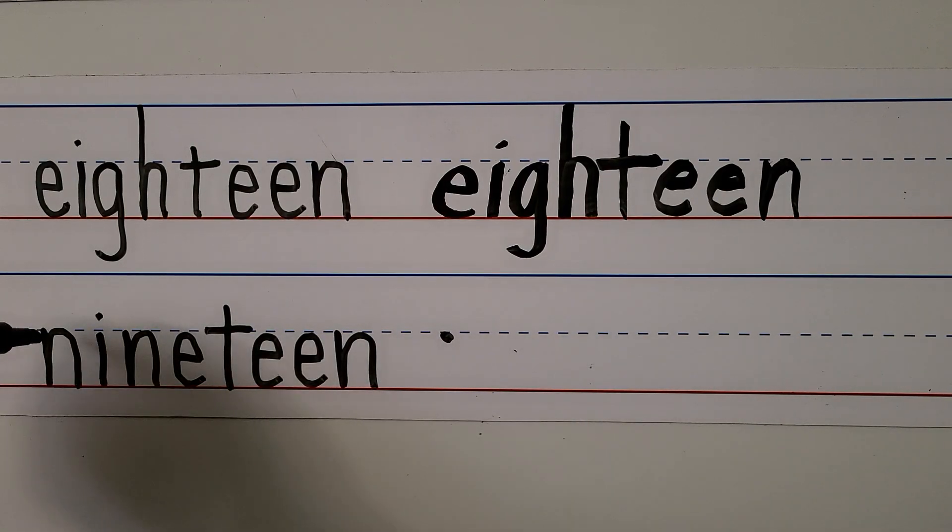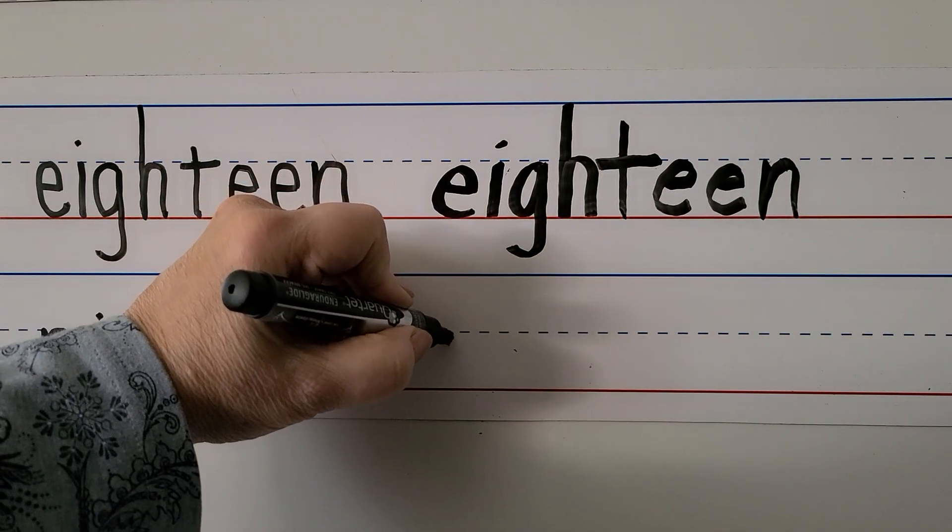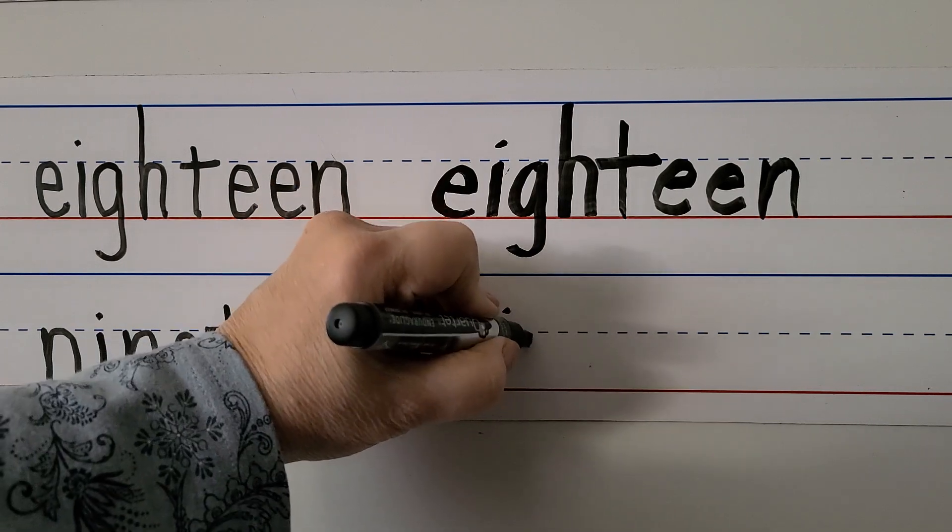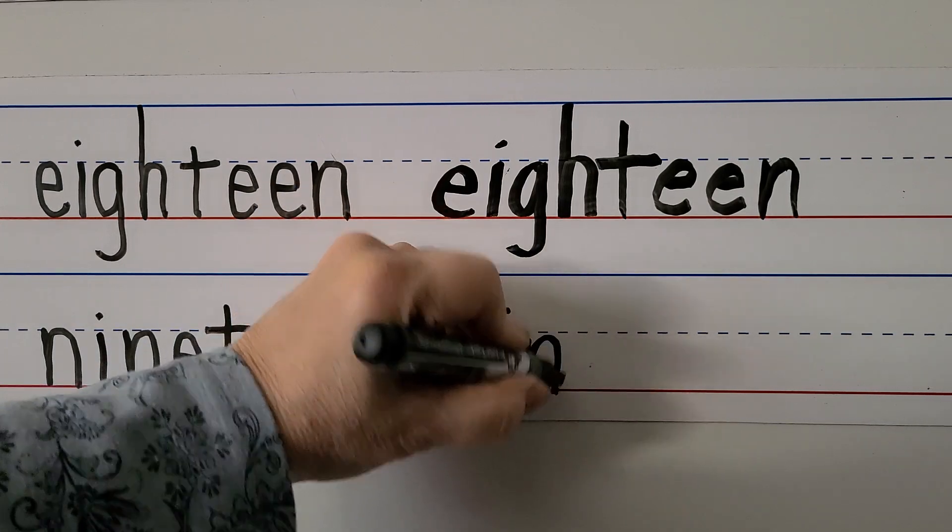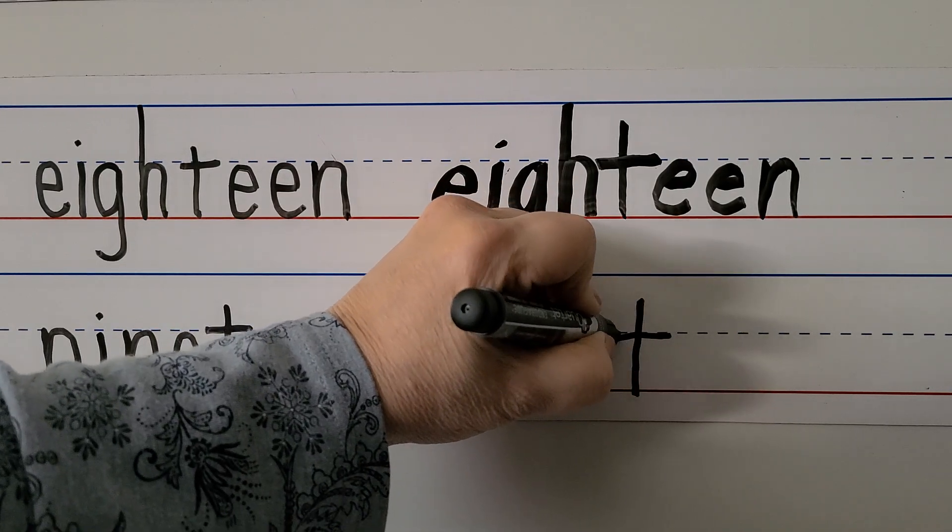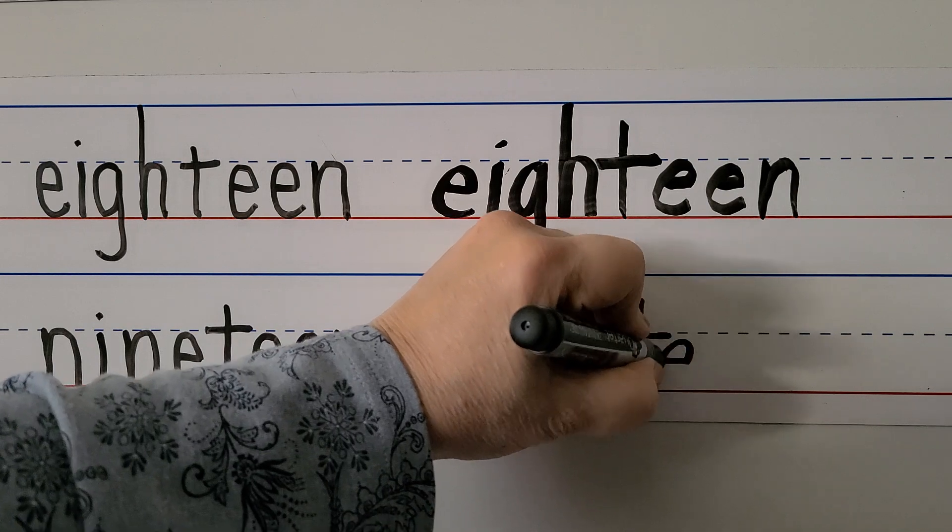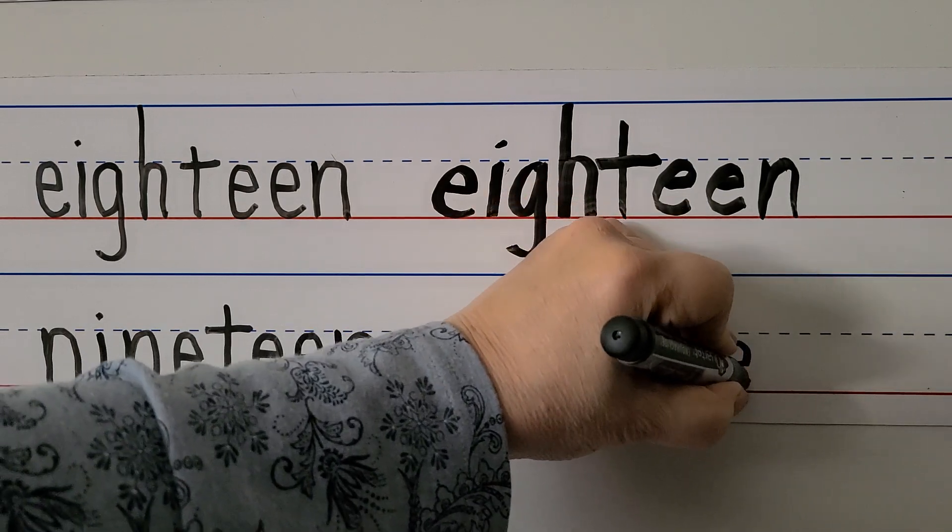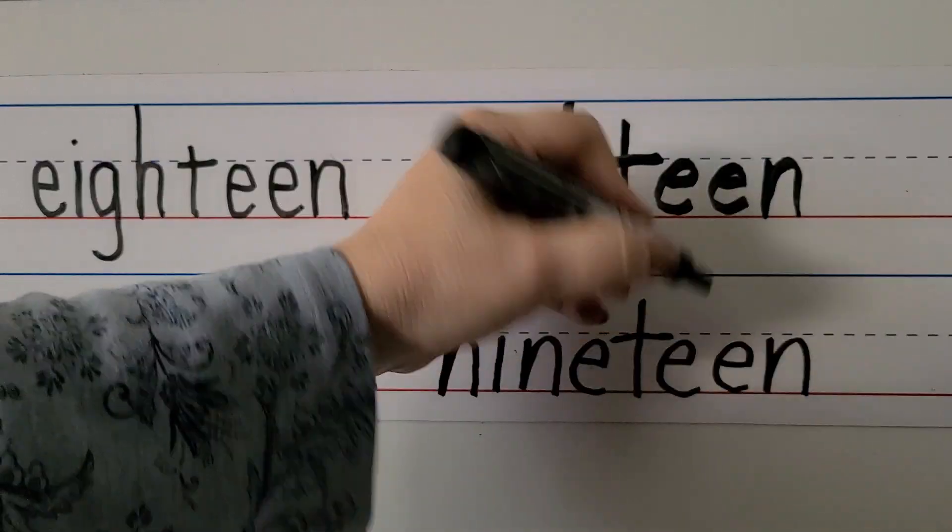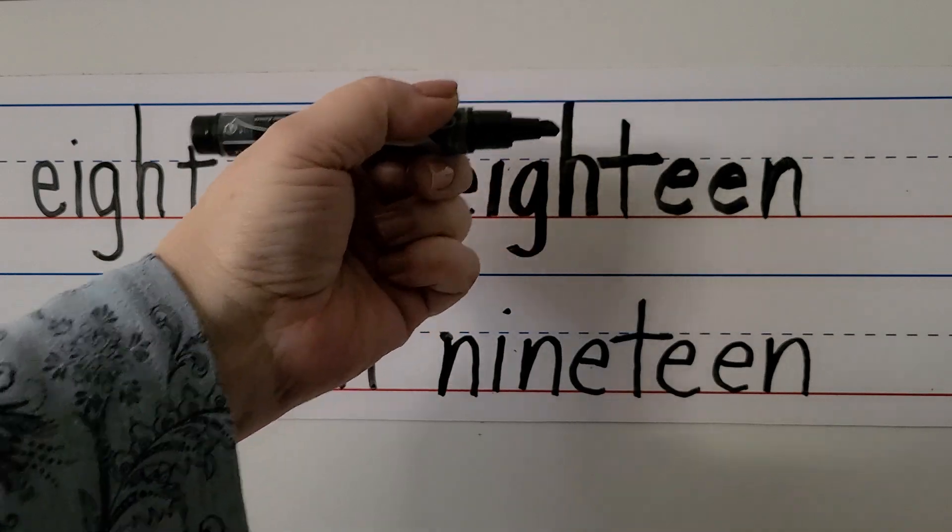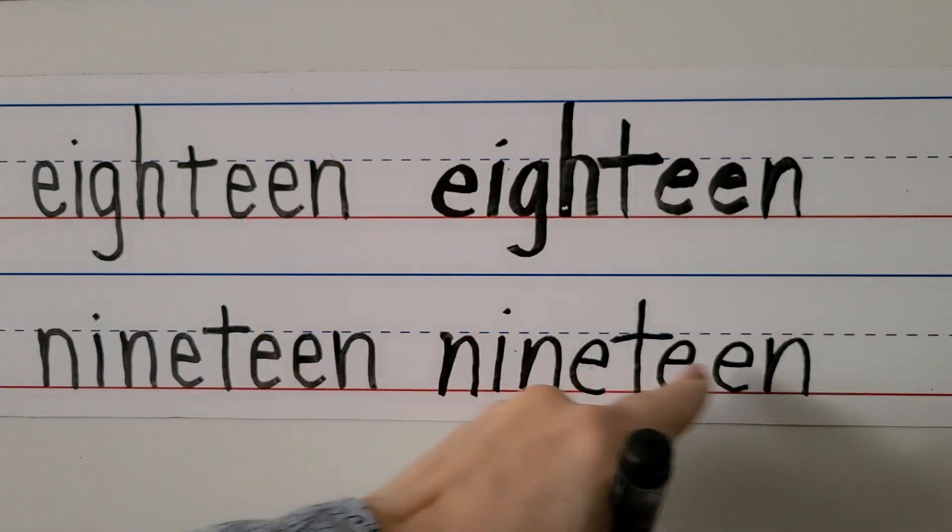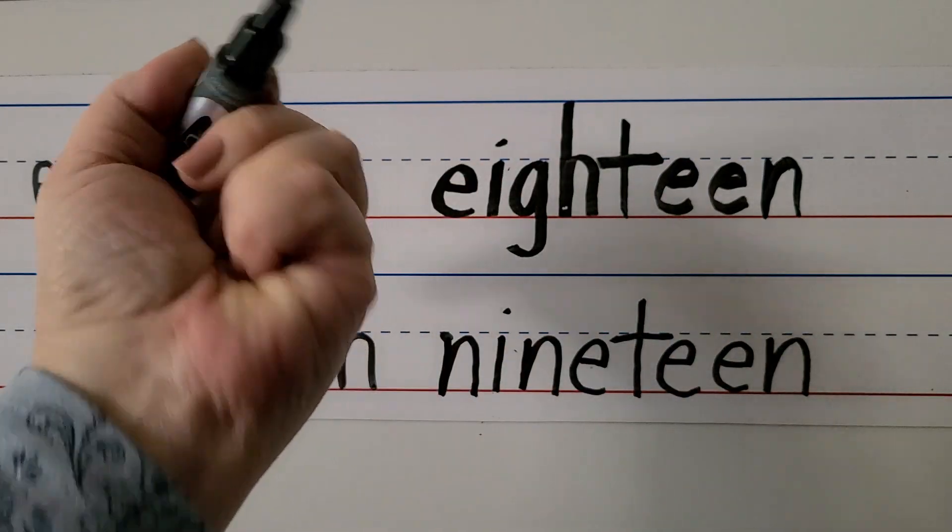We can write the word 19. We start with an N right here in the dashed line: N, I, N, E, T. We go over on this side and pull it towards our hand: E, E, N. And you see how I've got my fingers like a little bit, I've got my small finger leaning right here like this, because this is wet ink and I don't want to get ink all over the back of my hand.